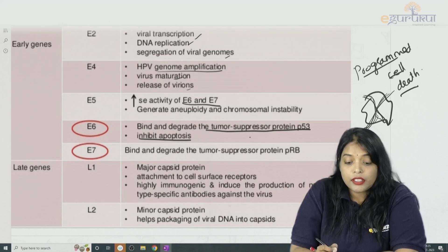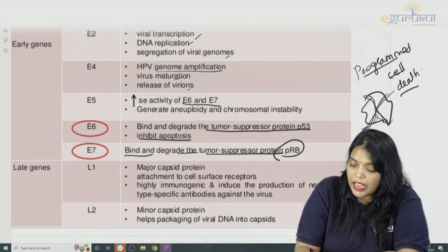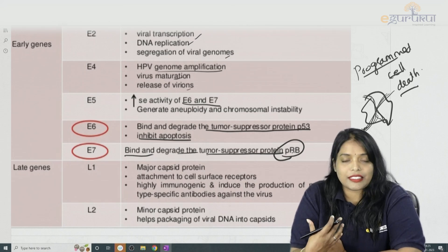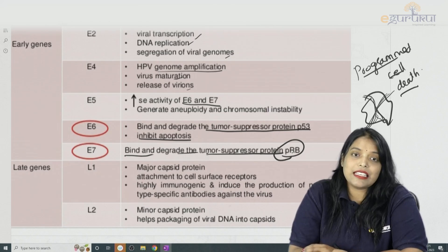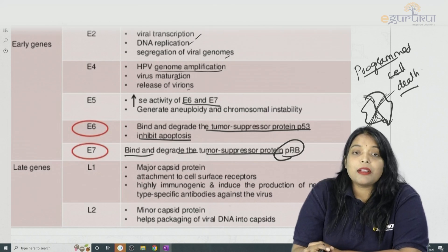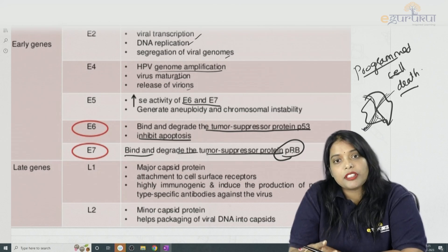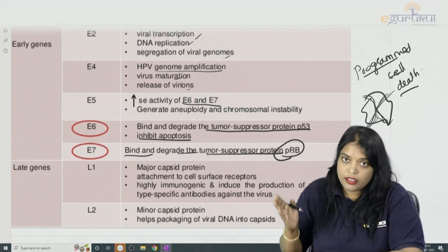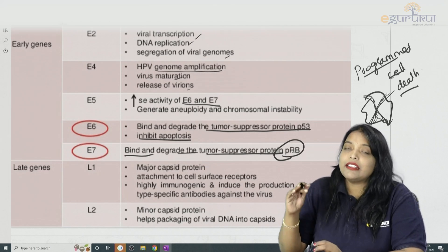E7 binds and degrades the tumor suppressor protein pRb gene. The Rb gene prevents excess or abnormal multiplication of cells, but as E7 suppresses the Rb gene, tumor suppression is also lost. So E6 suppresses p53 and E7 suppresses Rb — that is how cervical cancer gets initiated.